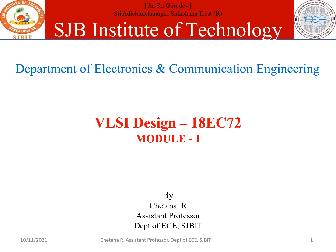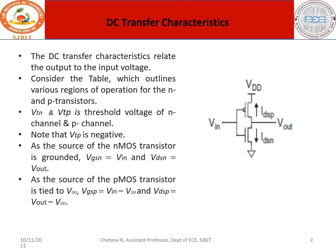We now go to the next topic called DC transfer characteristics. The DC transfer characteristics relate the output to the input voltage. We will look into the conditions described in the table in the next slide, which describes the various regions of operations for N and P type. A CMOS inverter comprises an NMOS and PMOS device, with threshold voltages VTN and VTP for N type and P type respectively.